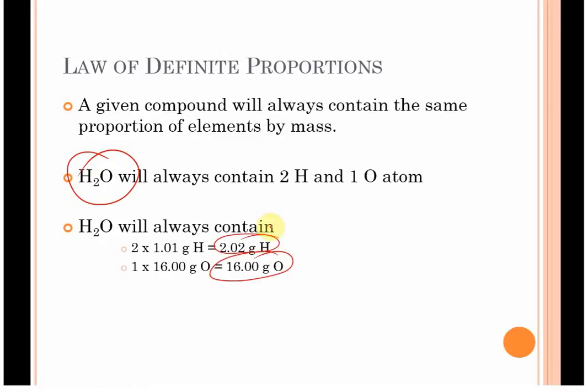So, every water molecule has one gram of hydrogen for every 8 grams of oxygen or a 2 to 16 ratio, however you want to view it. The basic, the most, the simplest way to look at this is just to say every water molecule has two hydrogens, one oxygen. If it is H2O, it's water. Anything else is going to be not water.